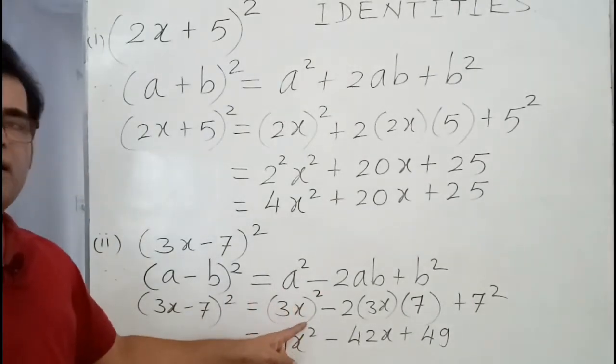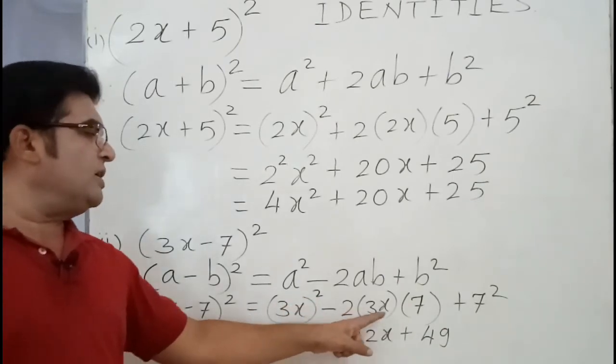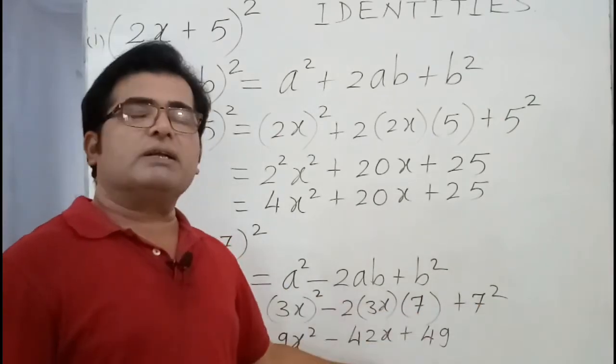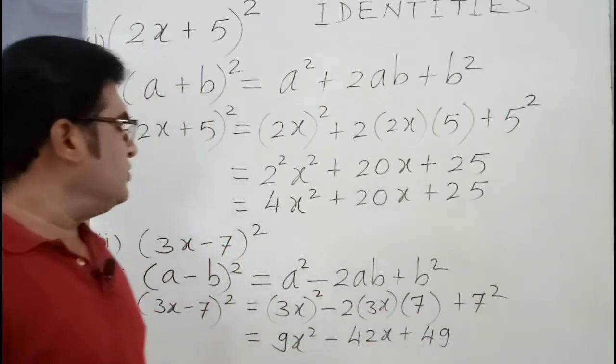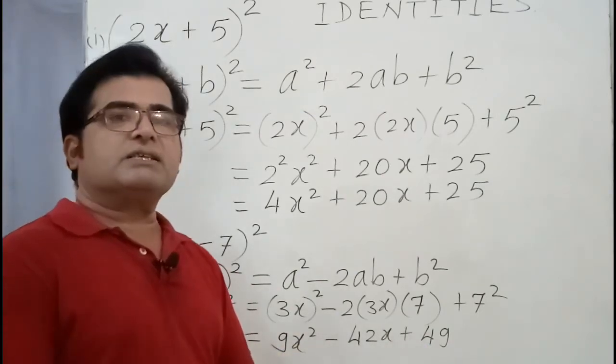It is 3² and x². So 3² is 9x² minus 2·3·7 = 42x, plus 7² is 49. So your answer is 9x² - 42x + 49.